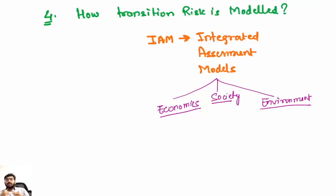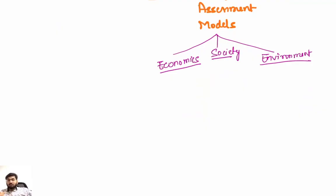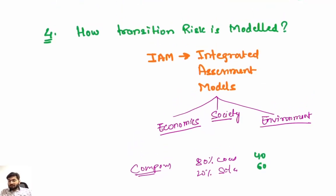For example, if carbon taxes will increase, then IAM is a model which will show how the industry will be affected and how energy mix will be used. If suppose a government will put a charge on carbon, so a company who is actually using 80 percent coal and 20 percent solar energy - after the carbon tax this mix of energy will change, suppose this will become 40 and this will become 60. So this will tell you how these changes are going to impact the organization in all possible manners, and most importantly financially.